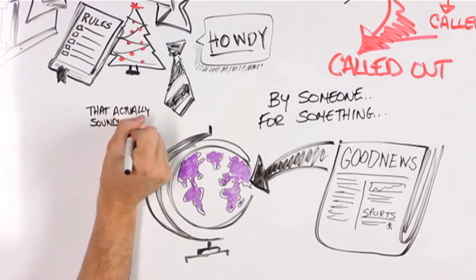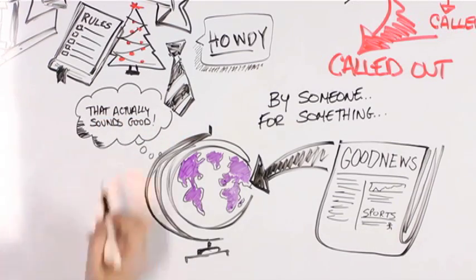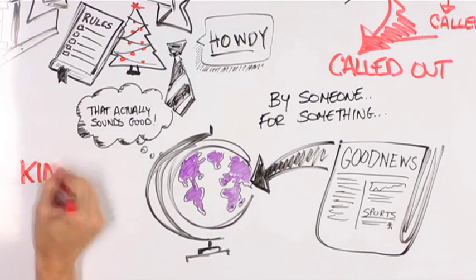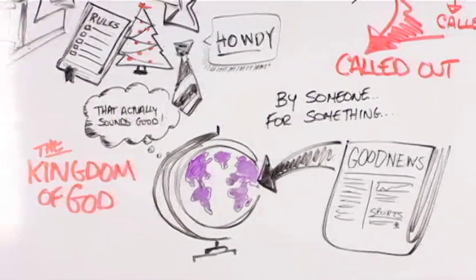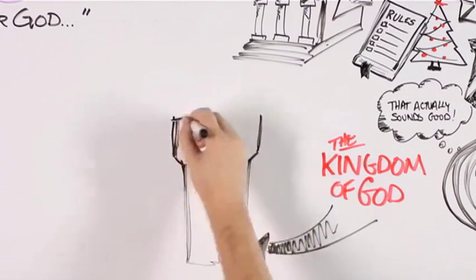And they, those outsiders, would see and receive that good news as actually good. When Jesus talked about the gospel, it was always in conjunction with something else, something called the kingdom of God.